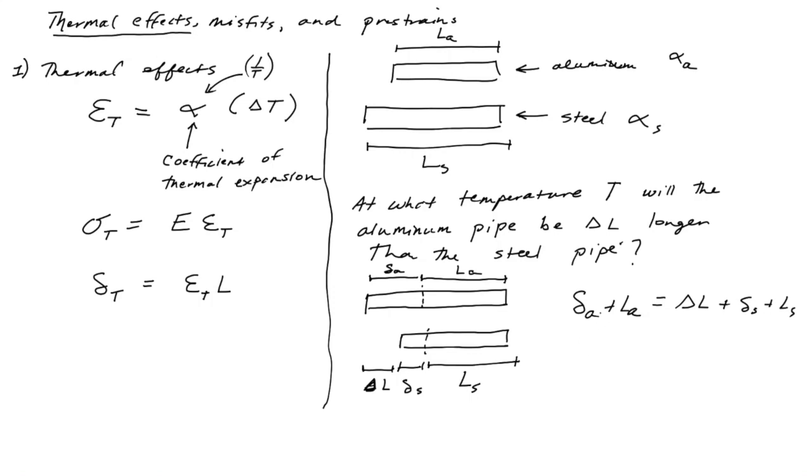Alright. Then we can simply plug in the effect of the thermal expansion for delta A and delta S, giving us alpha A delta T LA plus LA is equal to delta L plus alpha S delta T LS plus LS. And so I think I might have misspoken earlier, but what we're after is the temperature T, at what temperature will the aluminum pipe be delta L longer than the steel pipe? So that's where this delta L comes from.